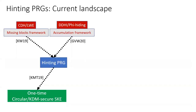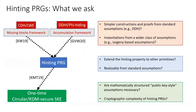Here is what the current landscape of hinting PRGs looks like in terms of known ways of constructing them and their implications. In this paper, we ask the following questions: Can we realize simpler constructions and proofs for hinting PRGs from a wider variety of assumptions, including plausibly post-quantum-safe isogeny-based assumptions? Can we naturally extend the hinting property beyond PRGs to other cryptographic primitives? Finally, can we have a more concrete understanding of the cryptographic complexity of hinting PRGs, and if they necessarily require mathematically structured public key assumptions?